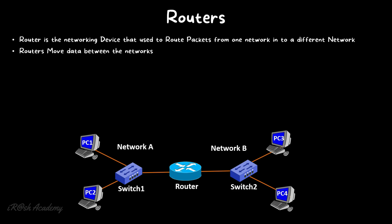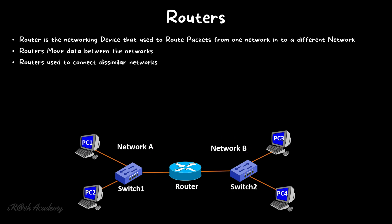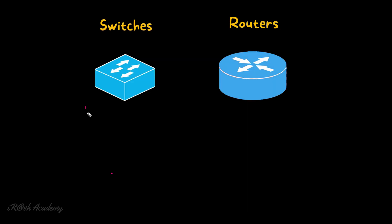Similarly, when PC3 wants to communicate with PC2, the router routes from network B to network A. The router moves data between networks. It is a device used to connect dissimilar networks — its main function is to route data between different networks. If PC1, PC2, PC3, and PC4 were all on the same network, a router would not be needed; a network switch would be sufficient.